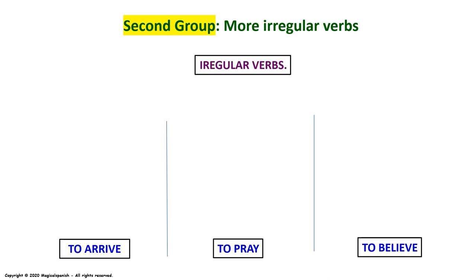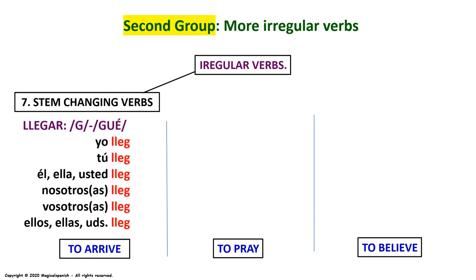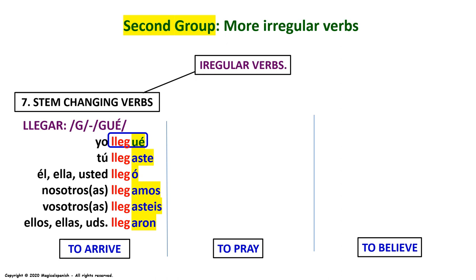Continuing with the second group of irregular verbs — group number seven: stem changing verbs. We have LLEGAR, meaning 'to arrive.' We are going to change the letter G into GUE. LLEGAR in preterite would be: Yo llegué. Tú llegaste. Él, ella, usted llegó. Nosotros, nosotras llegamos. Vosotros, vosotras llegasteis. Ellos, ellas, ustedes llegaron. Pay attention to the first person singular: yo llegué — the letter G changes into GUE, and don't forget the graphic accent or tilde. The rest of the personal pronouns are conjugated as a regular verb.